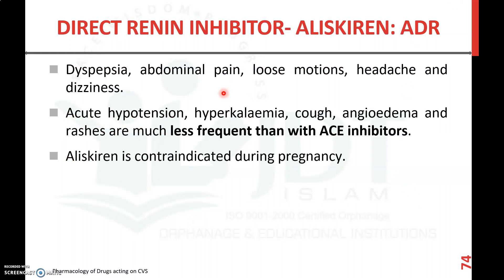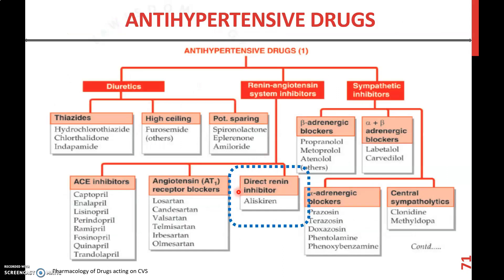Direct renin inhibitors may produce adverse drug reactions including dyspepsia, abdominal pain, loose motions, headache, dizziness, acute hypotension, hyperkalemia, cough, and angioedema. However, cough and angioedema are less frequent than with ACE inhibitors. Aliskiren is contraindicated during pregnancy. Those are the direct renin inhibitors.